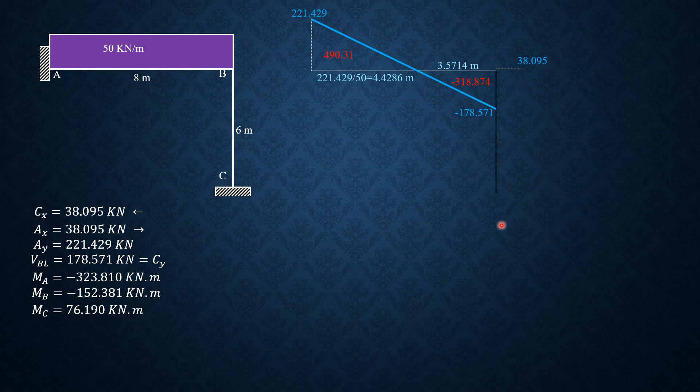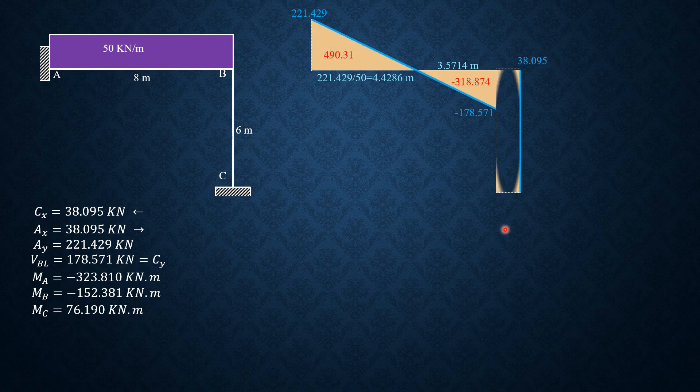So this is 38.095 and constant, and it crosses here. So that's the shear force diagram in kilonewtons. You may shade, you may not. The area here is 38.095 times 6.